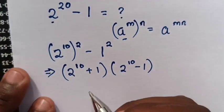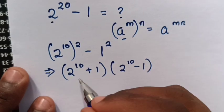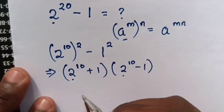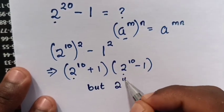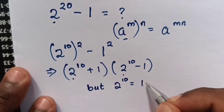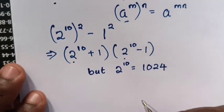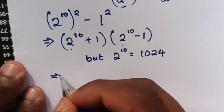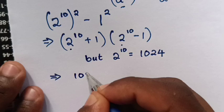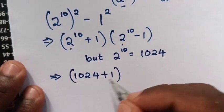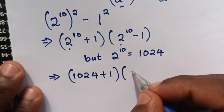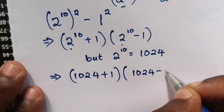Now, 2^10 here and 2^10 here. But 2^10 is equal to 1024. So we substitute the value of 1024 here: (1024 + 1)(1024 - 1).